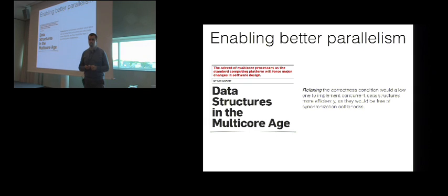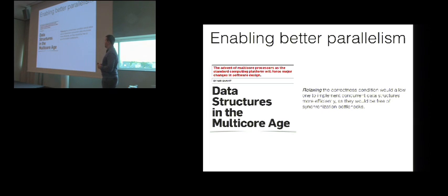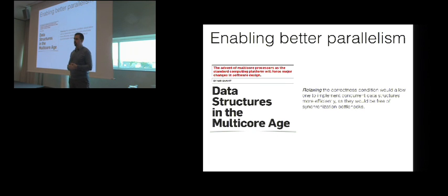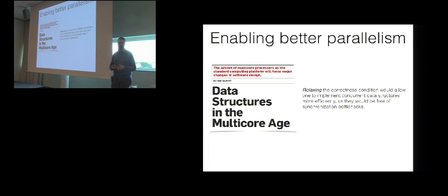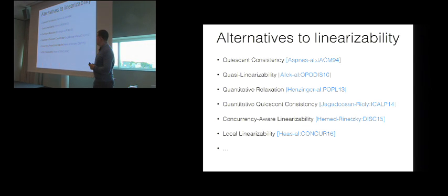So how do we take advantage of parallelism? The recent suggestions made by the giants of the concurrency community were: let's just drop linearizability, because it's a very strong correctness condition, but it also requires the synchronization primitives. In fact, we can implement something far more efficient if we relax our specification and use something else instead of linearizability. This was the call to arms, which resulted in a whole bunch of correctness conditions being developed over the last couple of decades, most of them quite recently, as a substitute for linearizability.